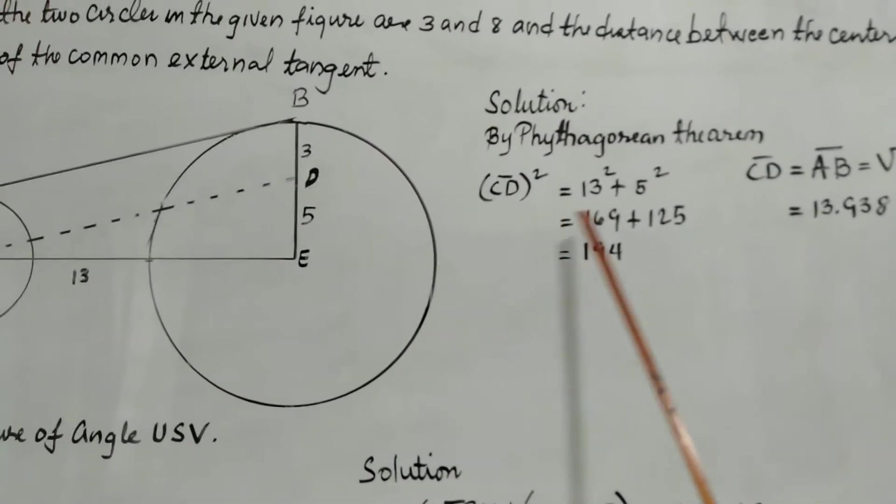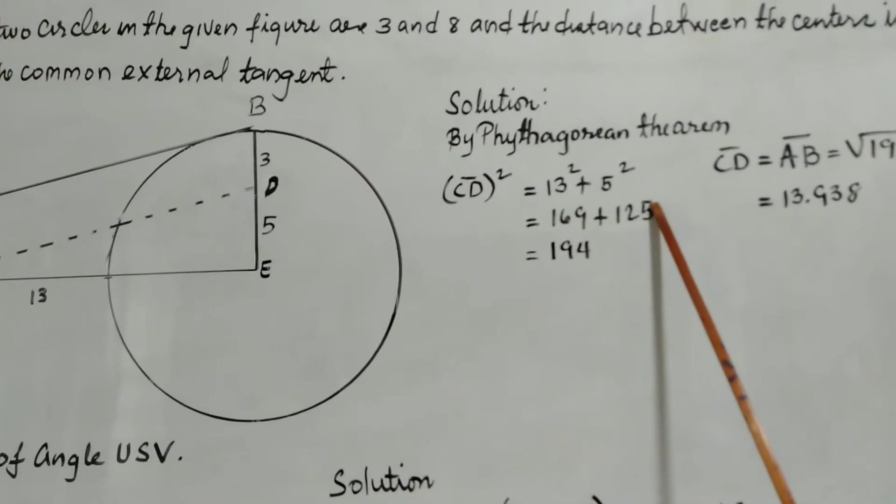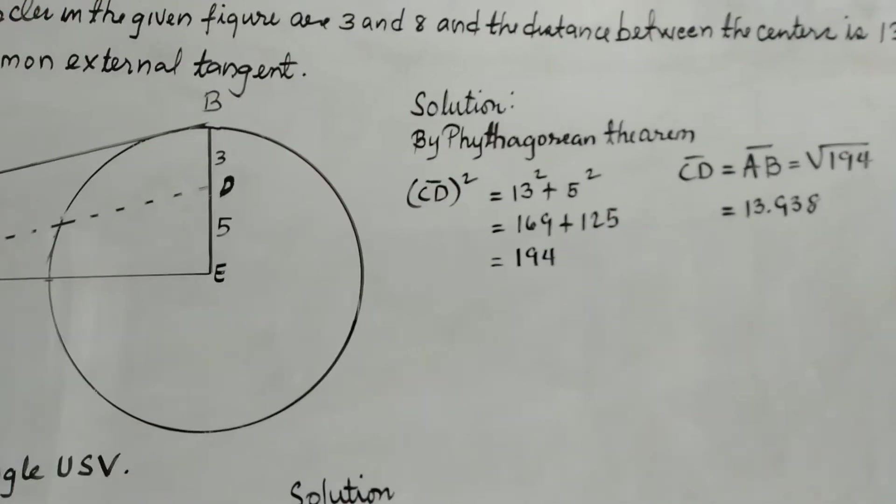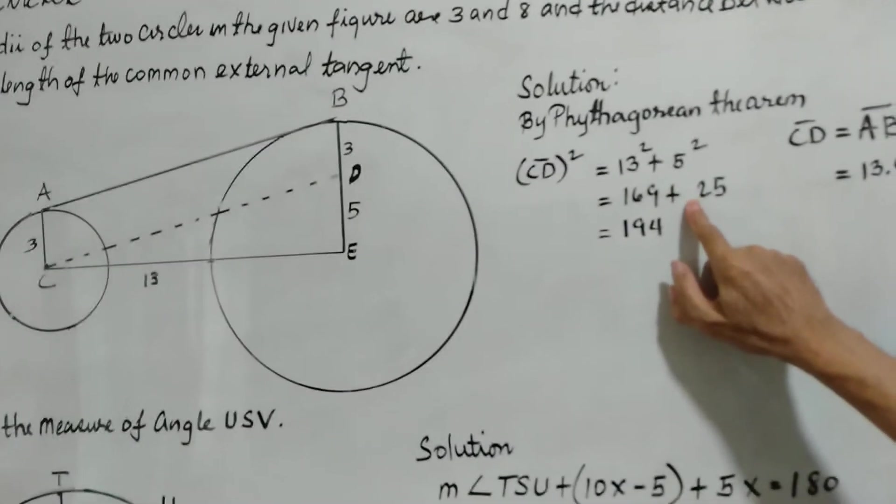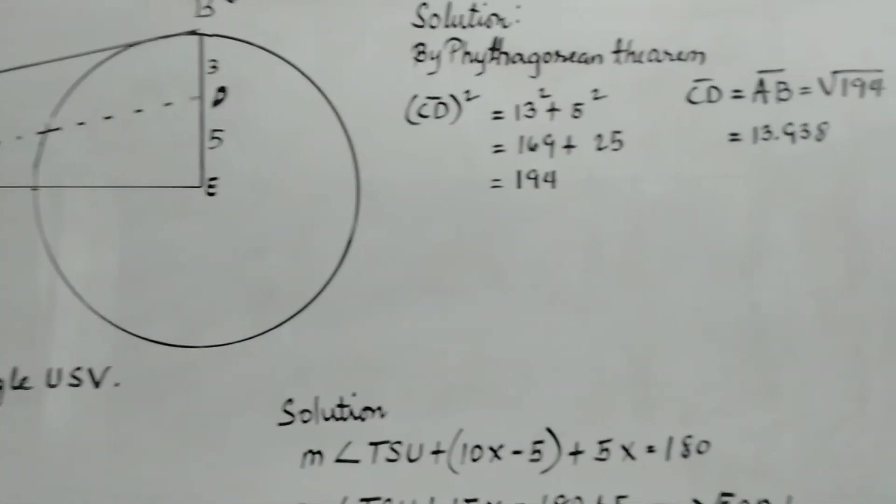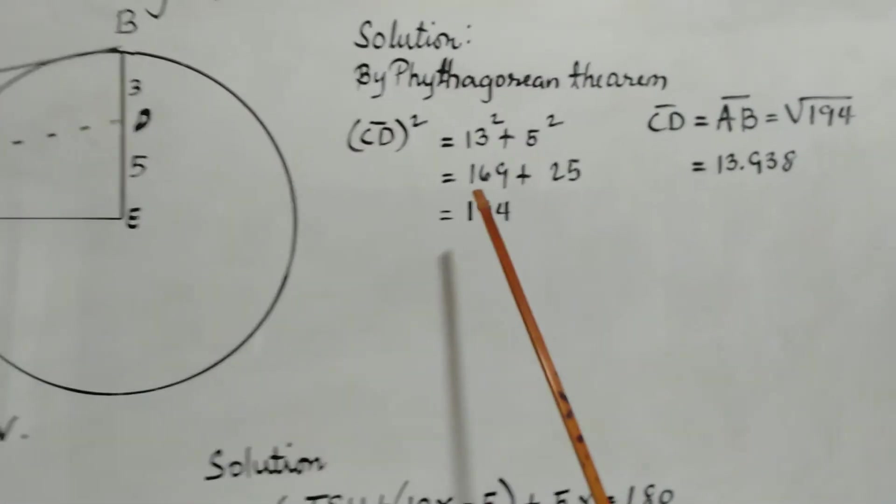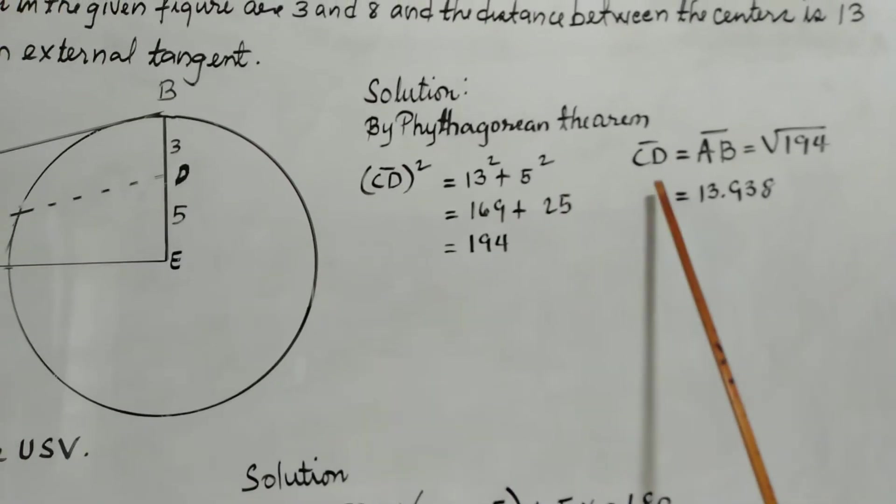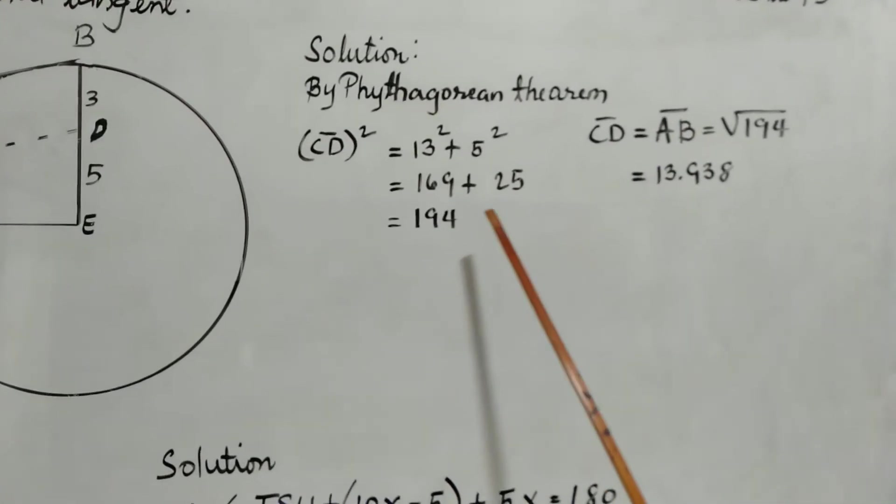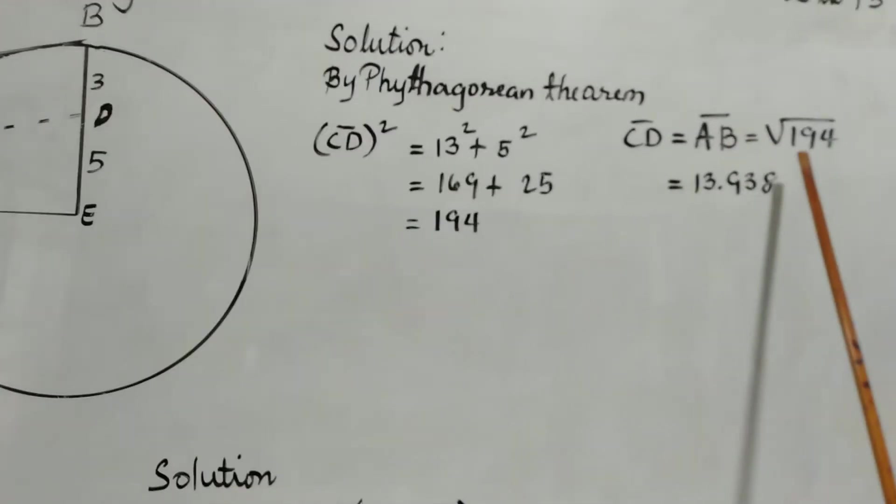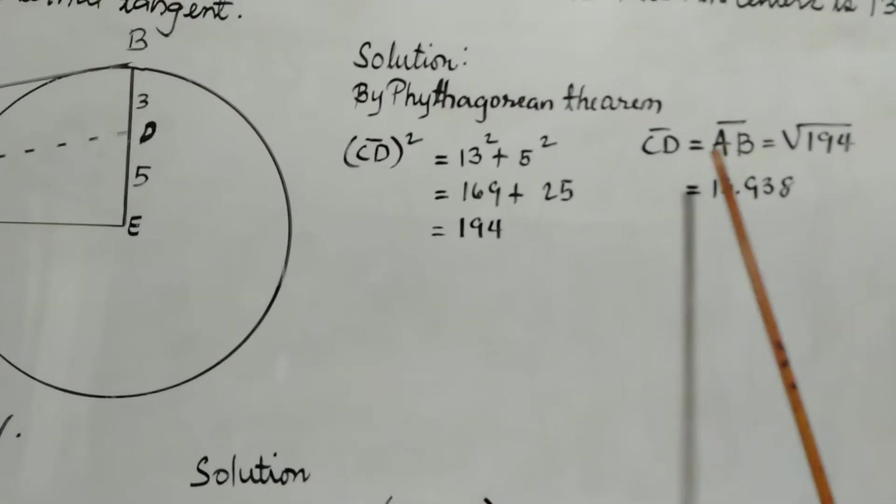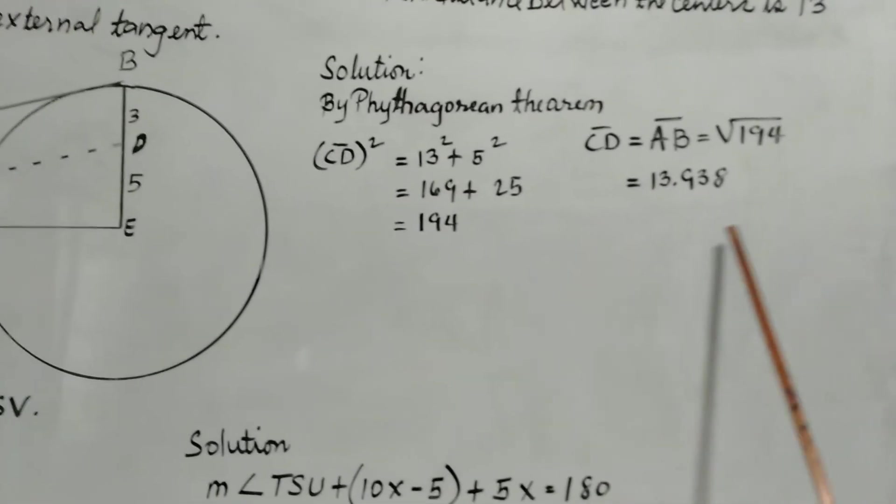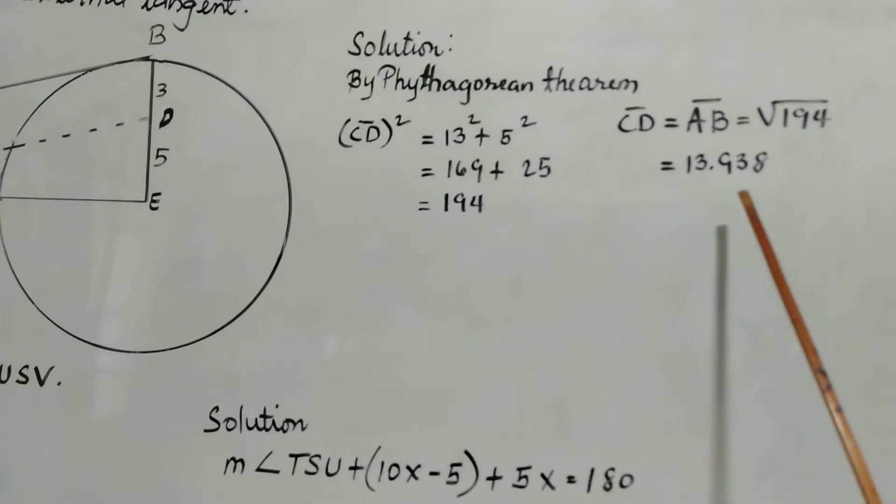CD squared is equal to 13 squared plus 5 squared. So 13 squared is 169, and 5 squared is 25. Adding the two, we have 194. To get CD, we just get the square root of 194, and that will also be equal to segment AB. So the length of the common external tangent of the two circles is 13.938.